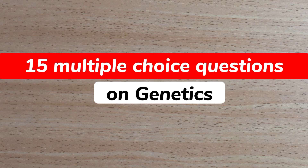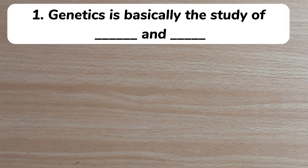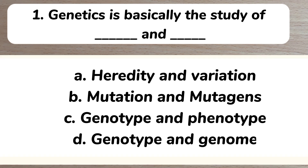Hey guys, here are 15 multiple choice questions on genetics. Number one: genetics is basically the study of blank and blank. A) heredity and variation, B) mutation and mutagens, C) genotype and phenotype, D) genotype and genome. Answer: A) heredity and variation.